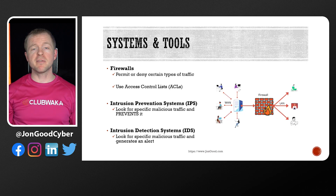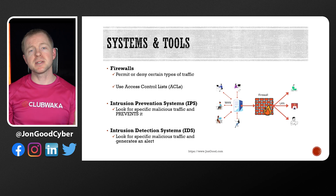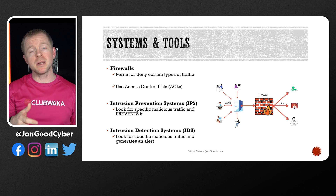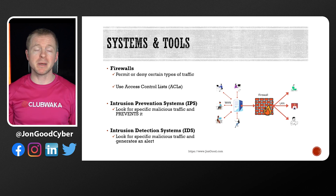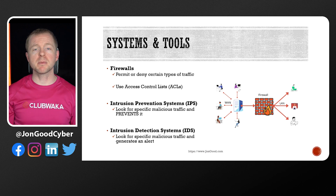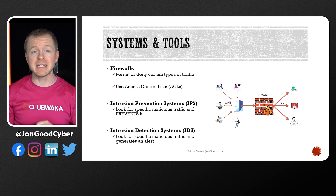Systems and tools allow us to benefit from technology and automation in software, hardware, or firmware. Firewalls are network devices that either permit or deny certain types of traffic based on access control lists, or ACLs, which is basically a list of rules. We have intrusion prevention systems, or IPSs, which actually analyze traffic deeper, and they stop known attacks.